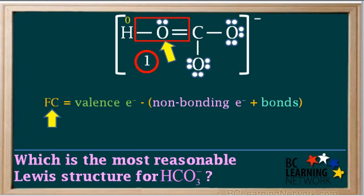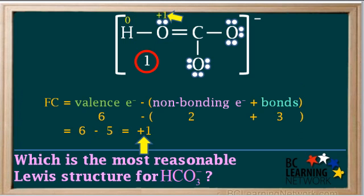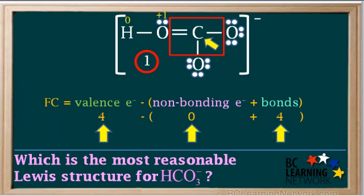Now we'll calculate the formal charge on this oxygen atom. Oxygen has 6 valence electrons. You can see the atom has 2 non-bonding electrons by counting the dots, and this oxygen atom has 3 bonds. So its formal charge is 6 minus (2 plus 3), or 6 minus 5, which equals positive 1.